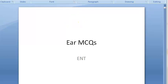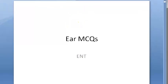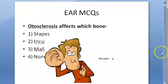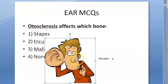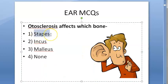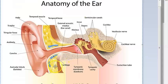Hello, in this video let us look at some MCQs on this topic. Otosclerosis affects which bone? The answer is the stapes bone. This is the stapes bone here — otosclerosis mostly affects the stapes.